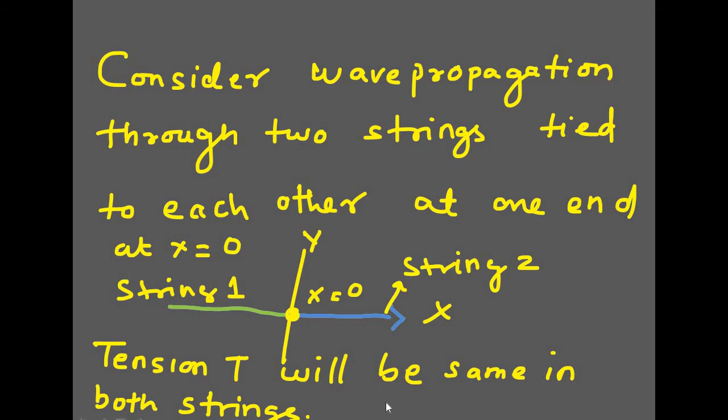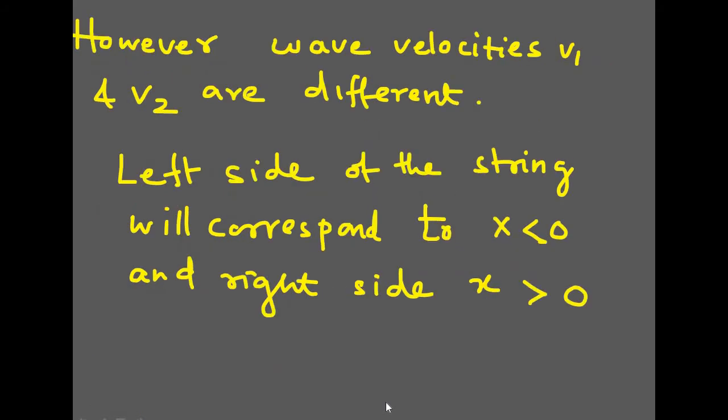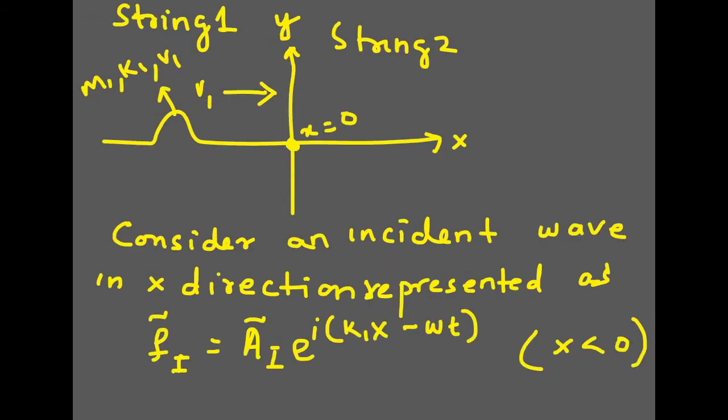Tension will be the same in both strings. However, wave velocities v1 and v2 are very likely to be different because they are two different strings. The left side corresponds to x less than 0 and the right side to x greater than 0, with the knot at x equal to 0.